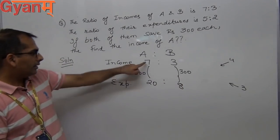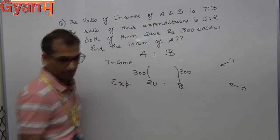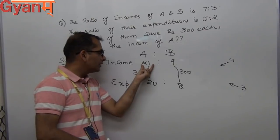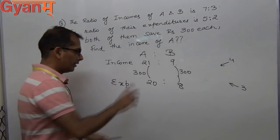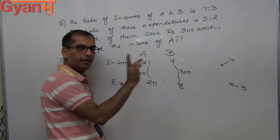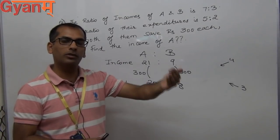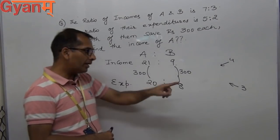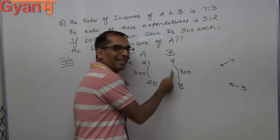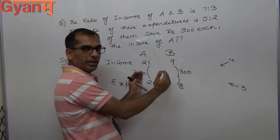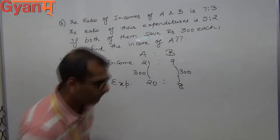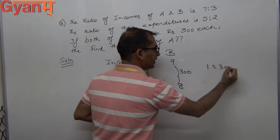The new income ratio is 21:9 and the new expenditure ratio is 20:8. A earns 21 in terms of ratio and spends 20, so A saves 1 part. Similarly, B earns 9 in terms of ratio and spends 8, so B also saves 1 part. The differences have now become equal.